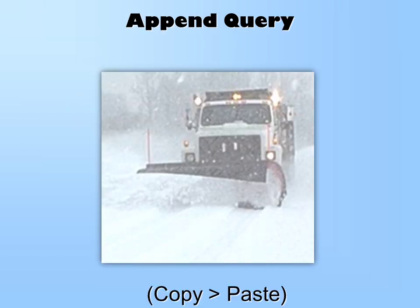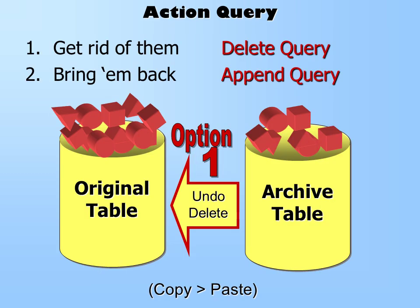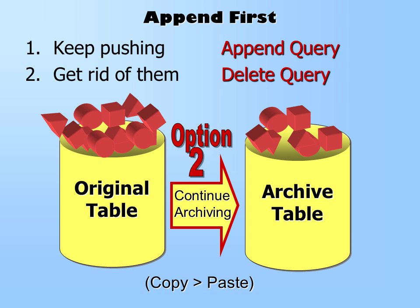Third, we look at the Append query. I think of it as a snowplow — I've never seen a snowplow working in Florida because there's no snow there, but I've seen them a lot in Denver. If I wanted snow from Denver in Florida, I'd start in Denver with a snowplow and push it down to Florida. That's essentially what the Append query does — copying and pasting — but you must start where the snow is, or where the records are. We have two options: if I want to undo a delete, I push from the archive table back to the original. But I could also continue archiving by pulling new discontinued products out of the original table into the archive table. Only you know which direction you want to go.